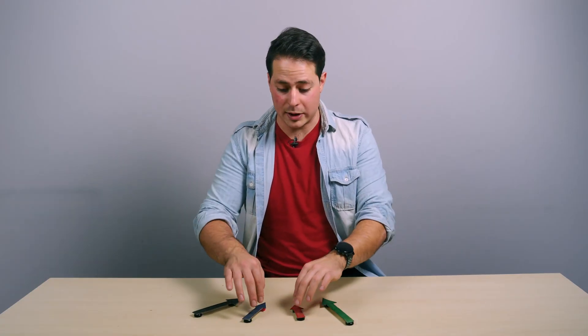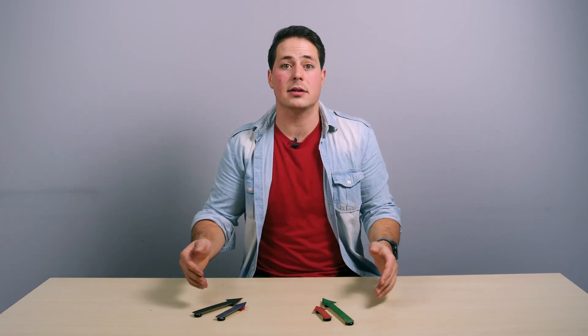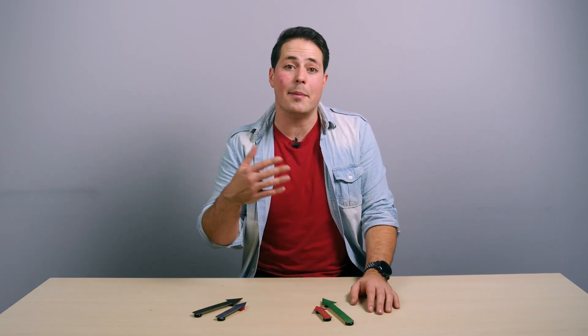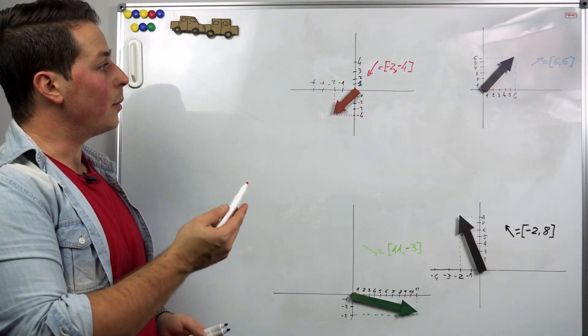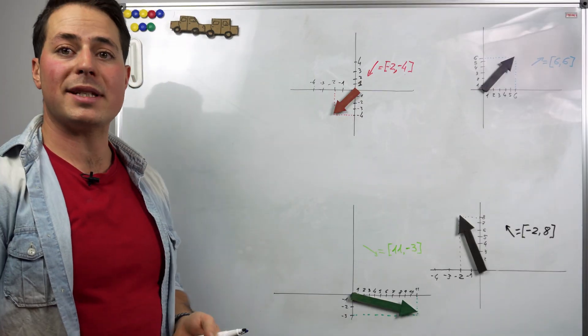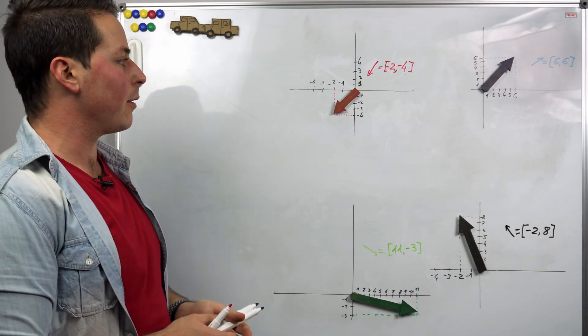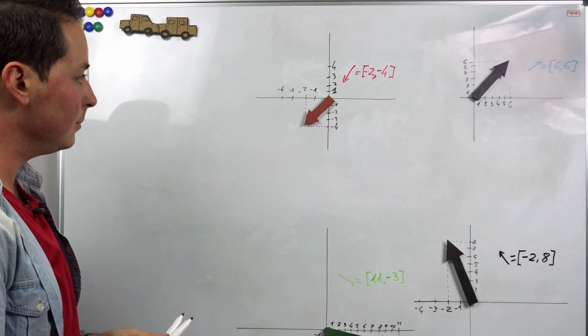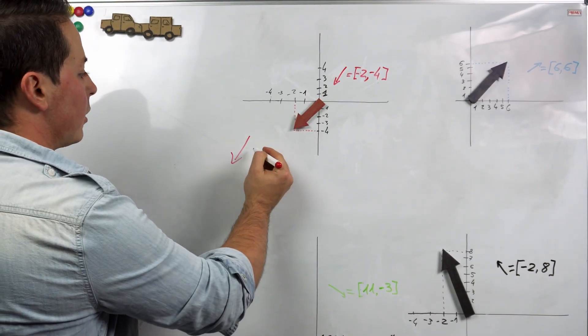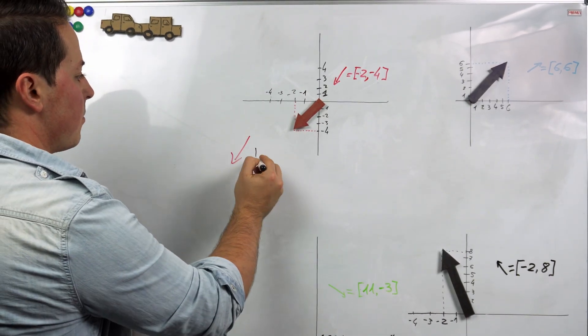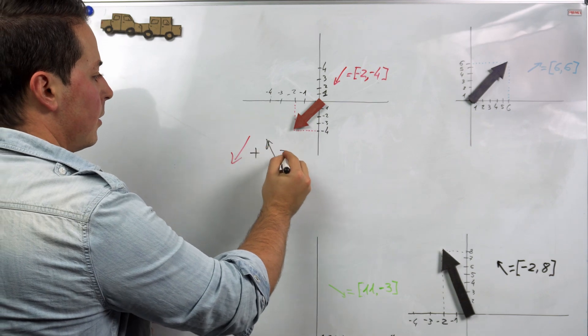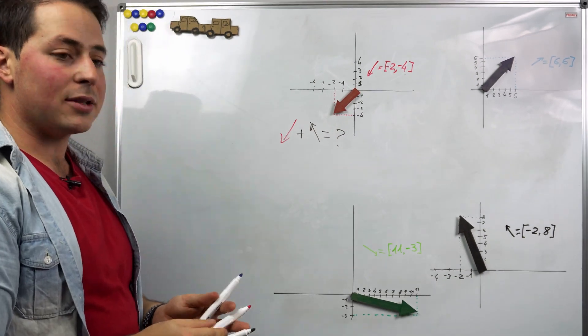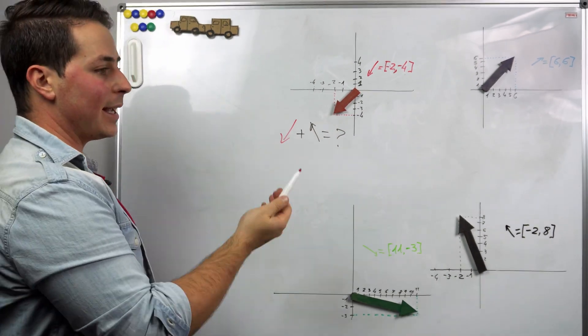So now we understand what adding vectors means, and it's time to do that mathematically. Ironically, we need numbers for this. You might know that we commonly represent vectors as the length of their axis, that's their x component and the y component. Well, when we add vectors like the red and the black one, we can use this representation to help us get a result.